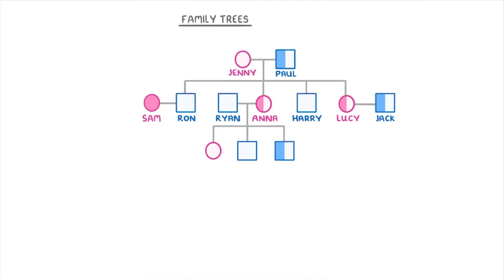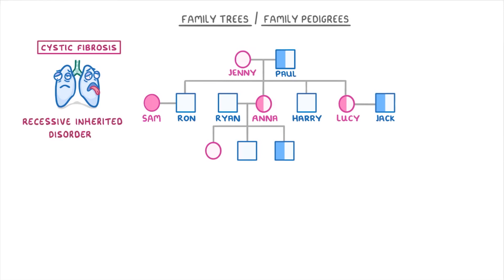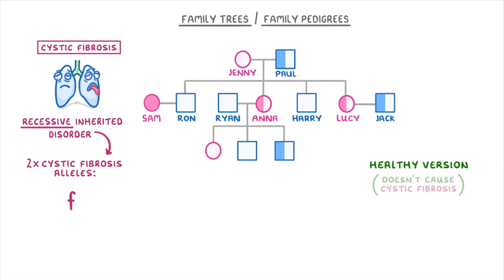In this video we're going to look at family trees, which are sometimes called family pedigrees. The one you can see here is an example of a family tree for cystic fibrosis, which is a recessive inherited disorder. The fact that it's recessive means that to actually have the disease you'd have to have two of the cystic fibrosis alleles. Because they're recessive, we show these alleles with a lowercase f. In contrast, the healthy version of the allele, which doesn't cause cystic fibrosis, is dominant and so we represent that with a capital F.